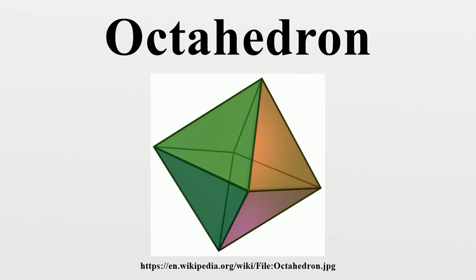The octahedron is four-connected, meaning that it takes the removal of four vertices to disconnect the remaining vertices. It is one of only four four-connected simplicial well-covered polyhedra, meaning that all of the maximal independent sets of its vertices have the same size. The other three polyhedra with this property are the pentagonal dipyramid, the snub disphenoid, and an irregular polyhedron with twelve vertices and twenty triangular faces.